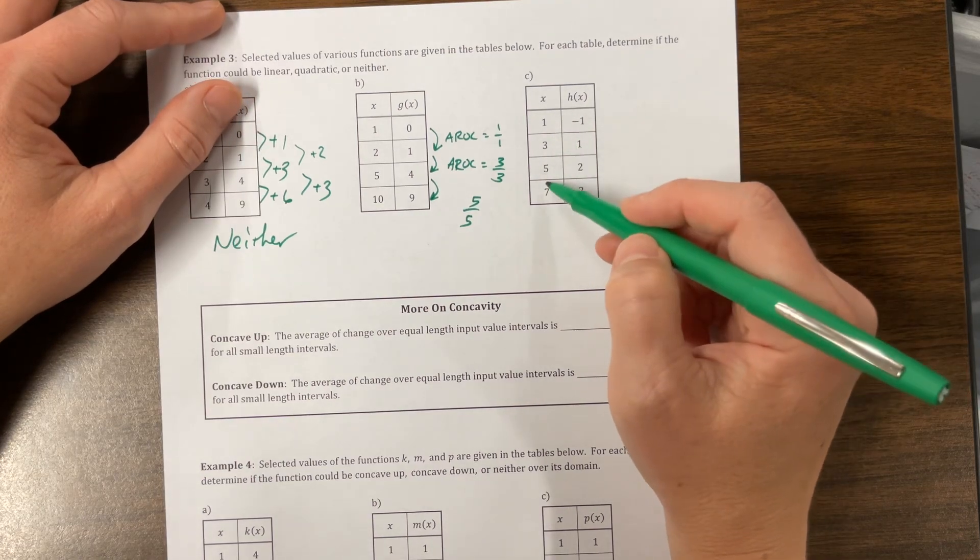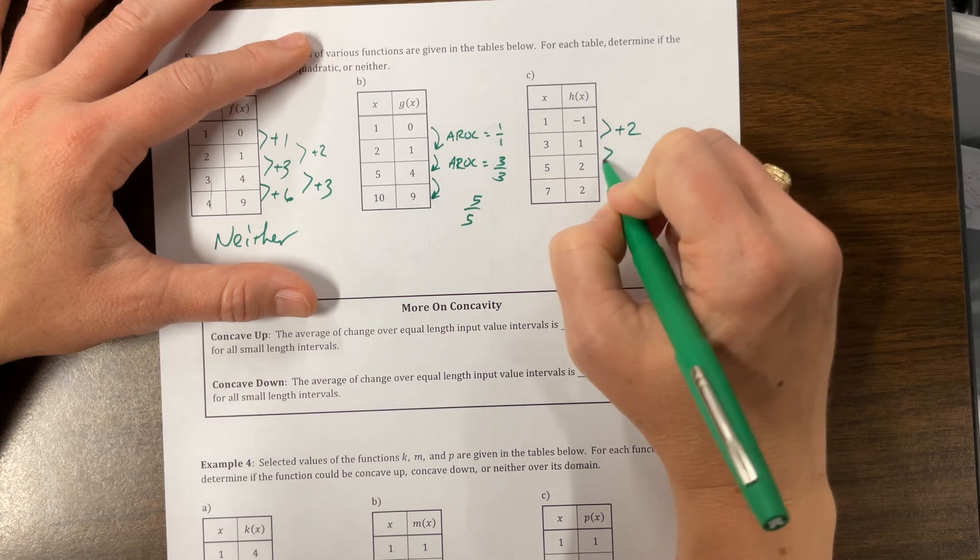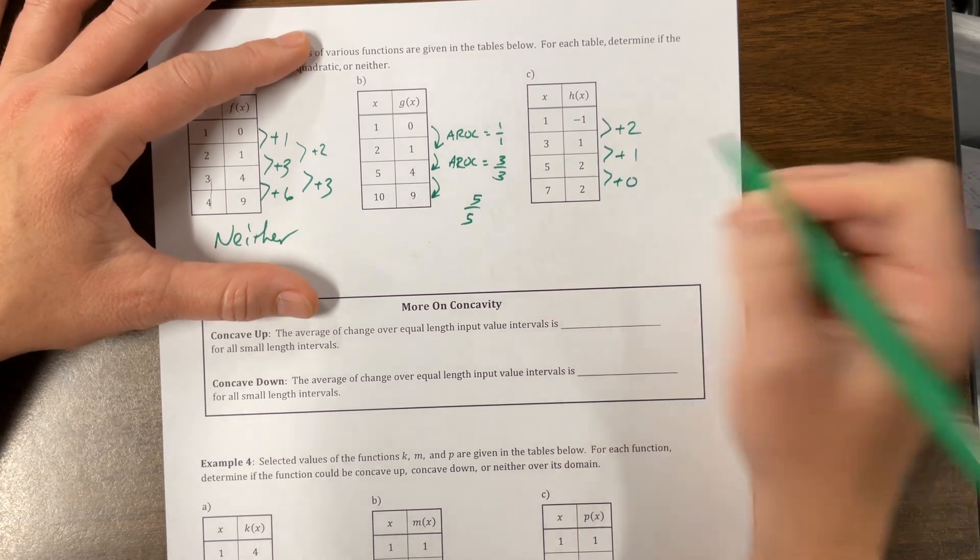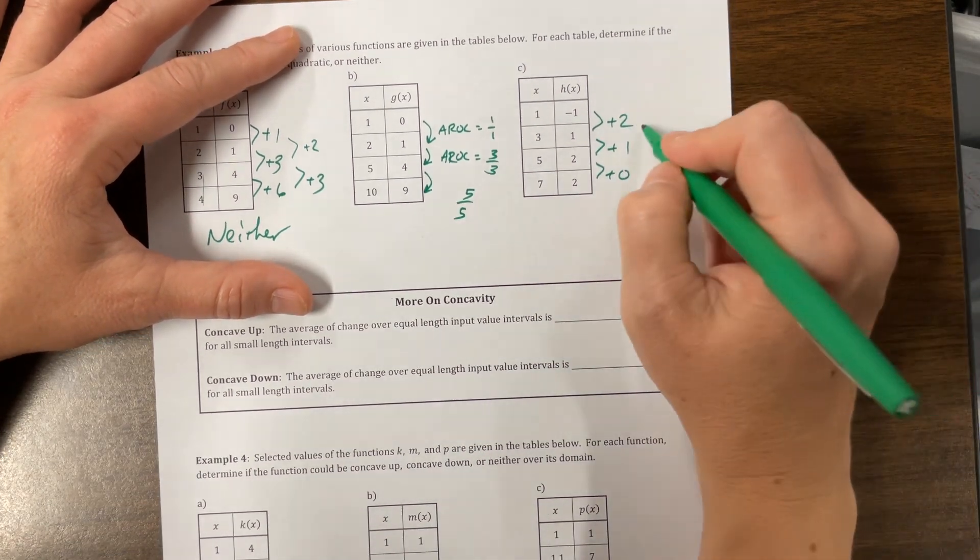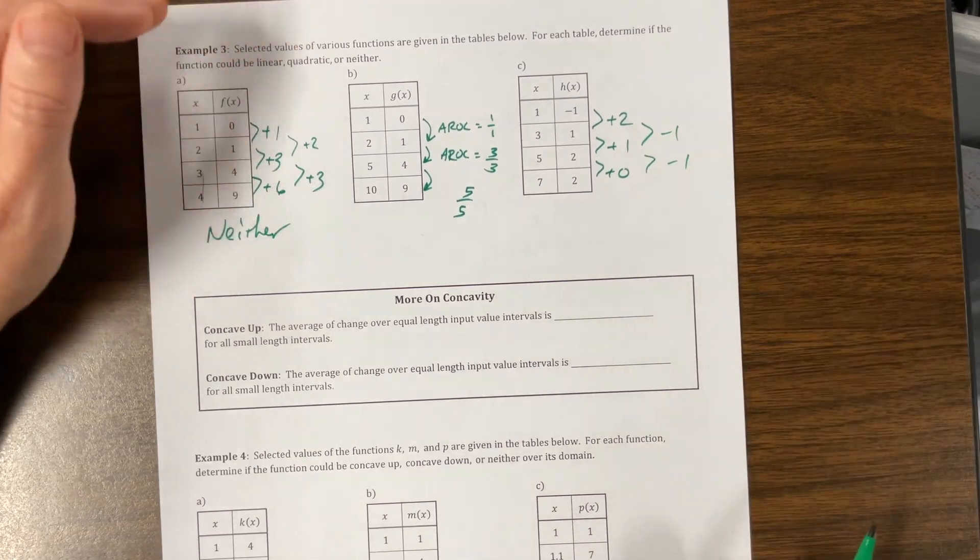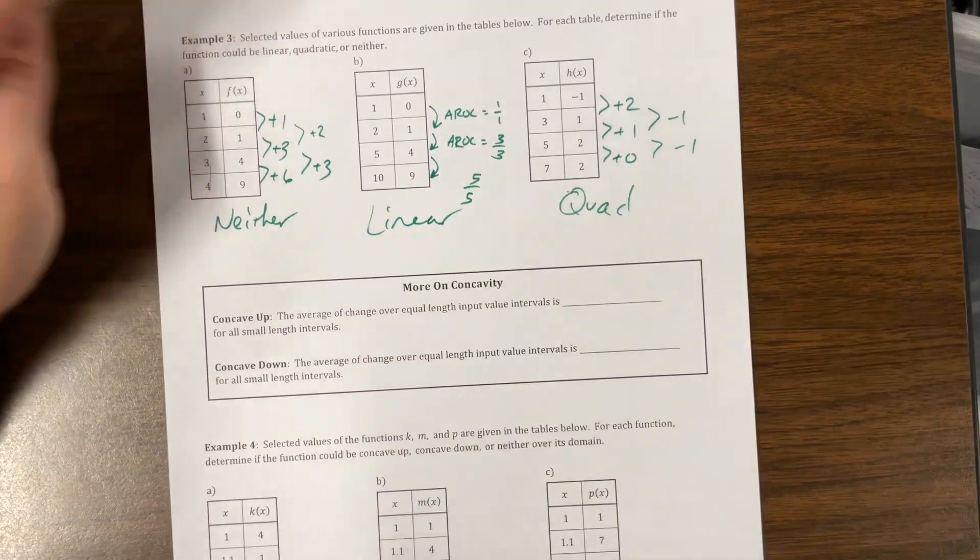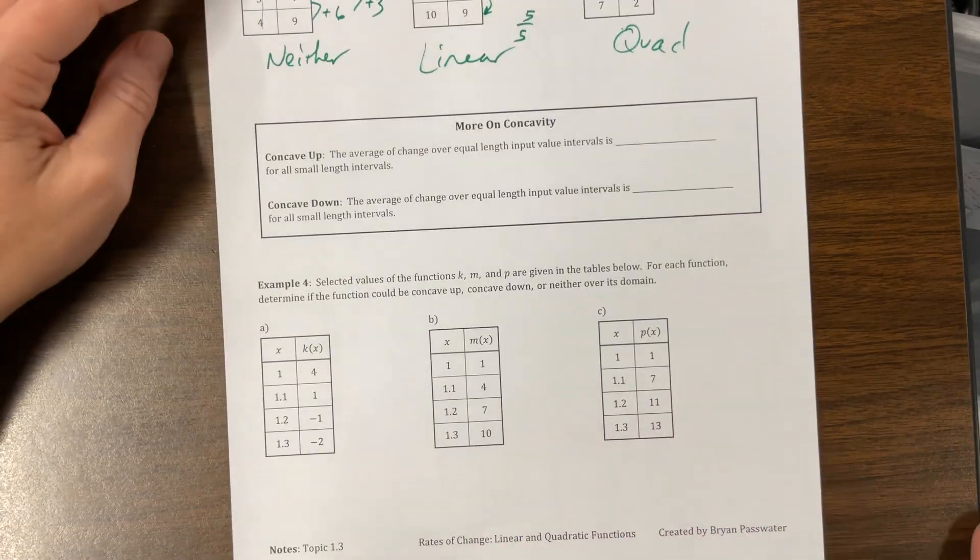On this one, what am I doing? I'm adding 2, I'm adding 2, I'm adding 2. What am I doing here? I'm adding 2, I'm adding 1, I'm adding 0. That is not constant. But what did I do to go from 2 to get to 1? I subtracted 1. From 1 to get to 0, I subtracted 1 again. So this one is quadratic. We forgot to say this is linear.